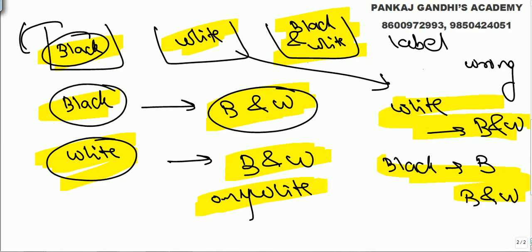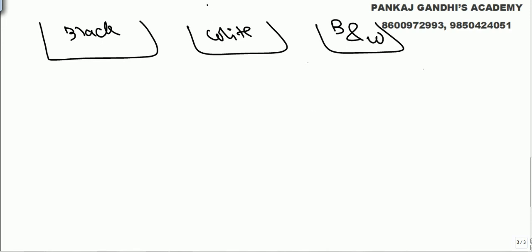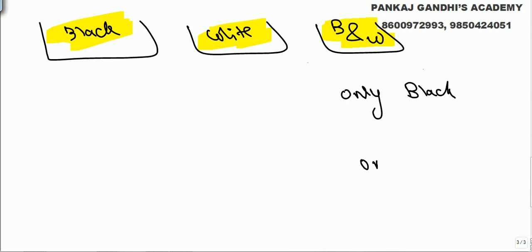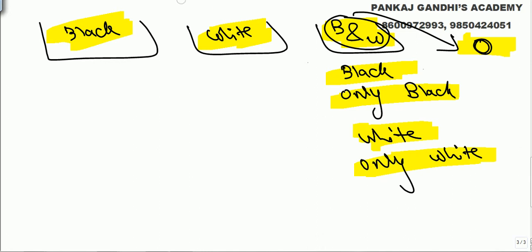We have to open the box with the label 'black and white.' The label 'black and white' is wrong, meaning it's not having the mixture — it's either having only black or only white. We take out one ball from this box. If it comes out black, it contains only black, because this is a wrong label so it does not contain the mixture. If the ball comes out white, it contains only white.